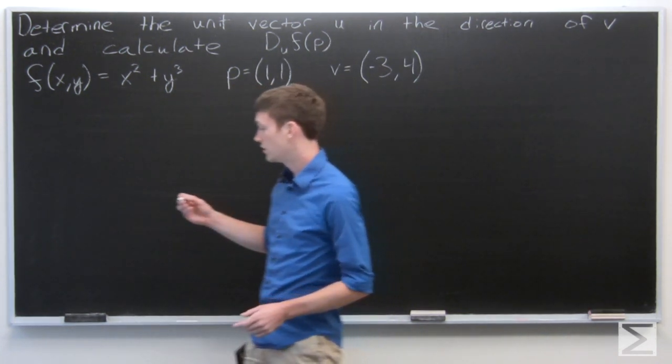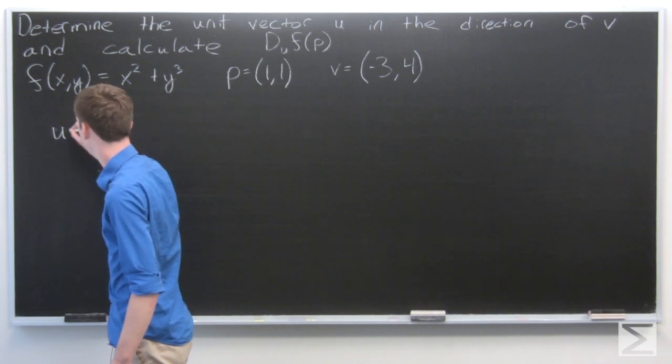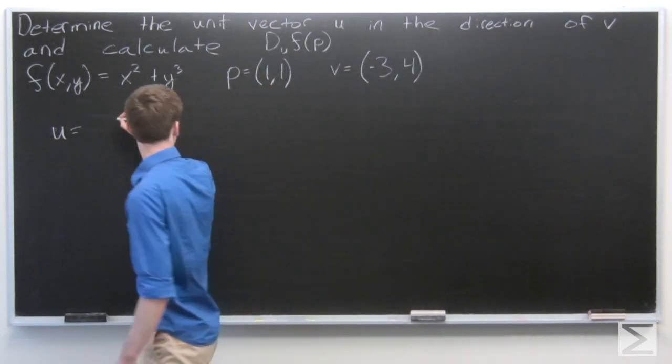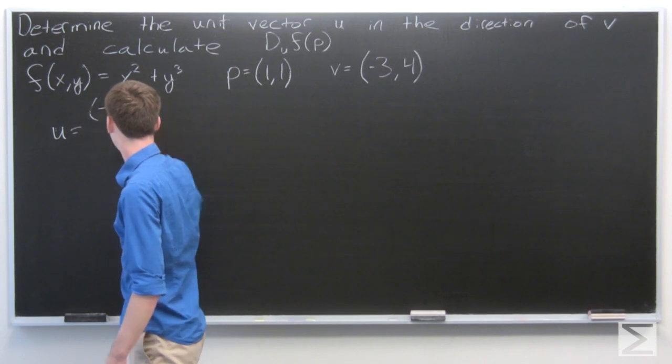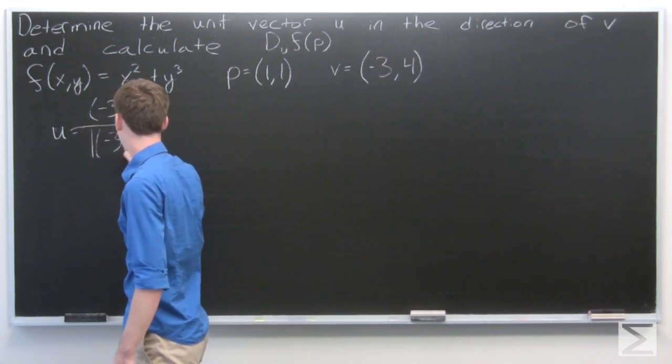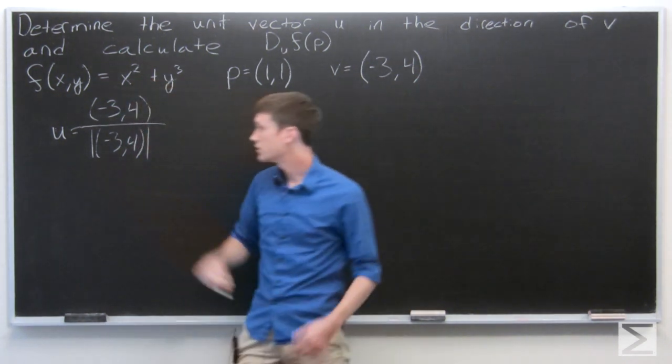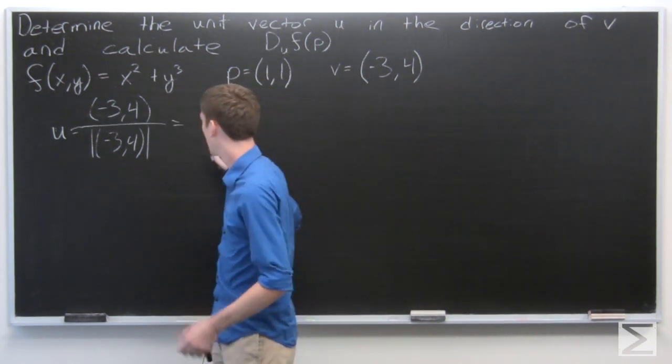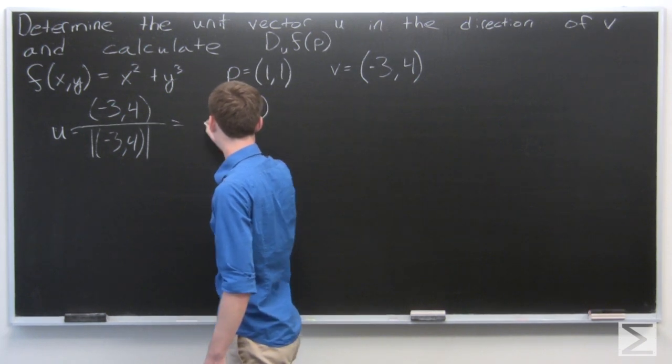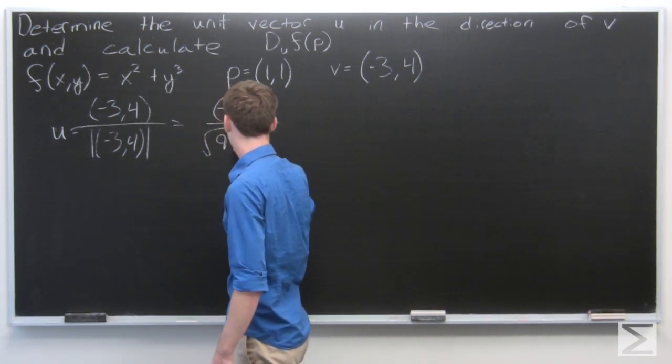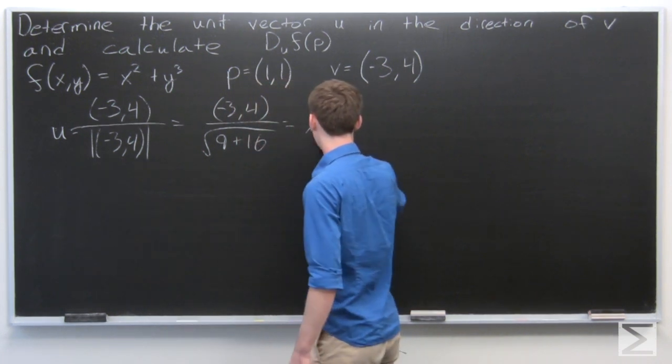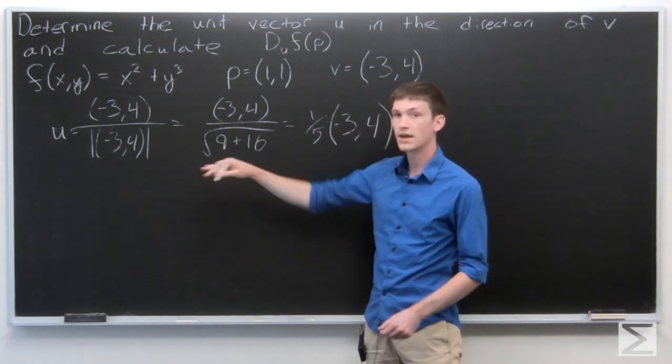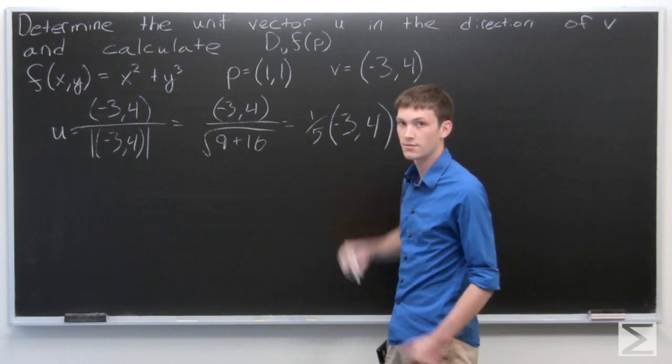So first we want to calculate u, which is a unit vector. u is going to be in the same direction as v, so we just want to normalize v. So u is (-3, 4) over the norm of (-3, 4). And we see that u is the vector 1/5 times the vector v.